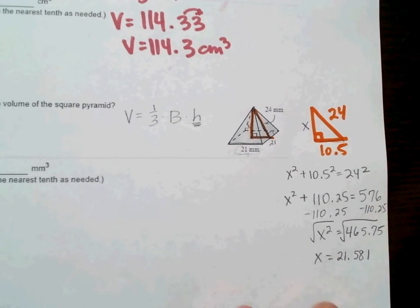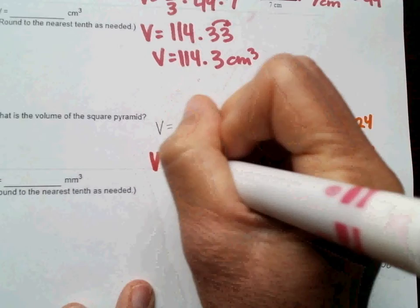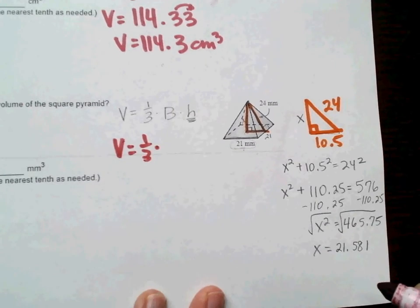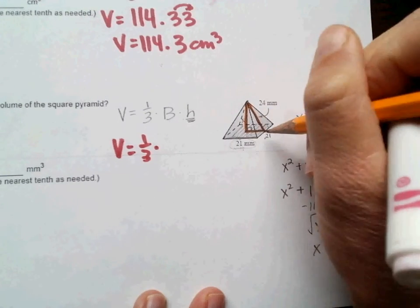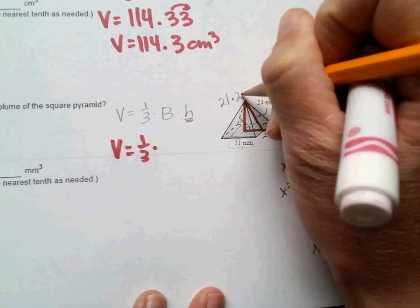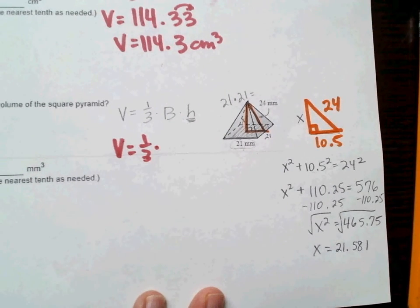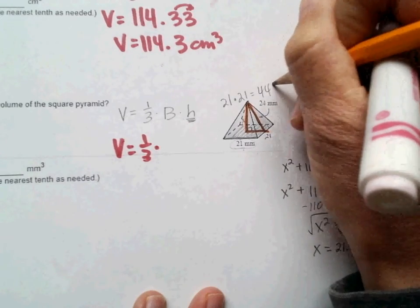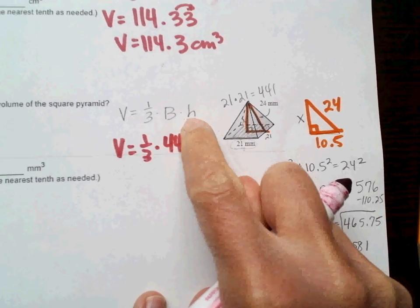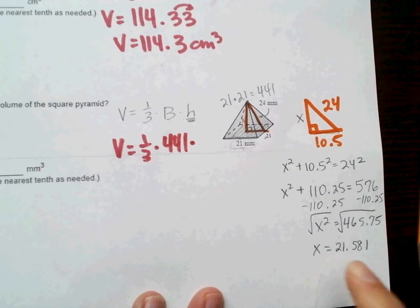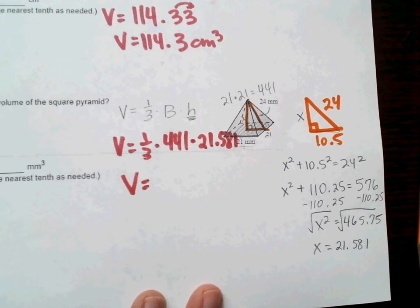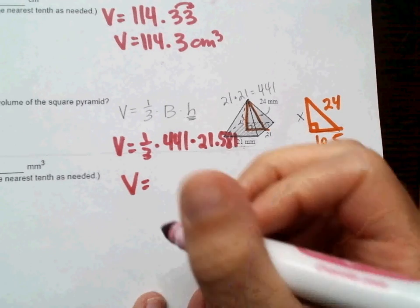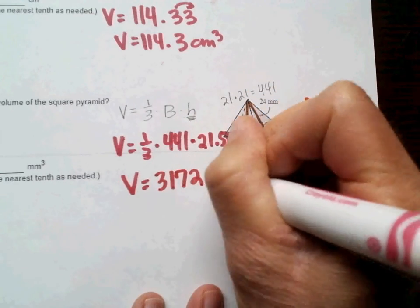Now come back over to your formula here. So, volume is equal to one-third times area of the base is just like we were doing up above. I need the area of the square. So, I'm going to do 21 times 21 to get the area of the square, which is the area of the base, and that gives me 441. So, it's going to be 441 times the height that I just found, and the height was 21.581. Sorry for all the decimals. So, I got one-third times 441 times 21.581, and that gives me 3172.407.